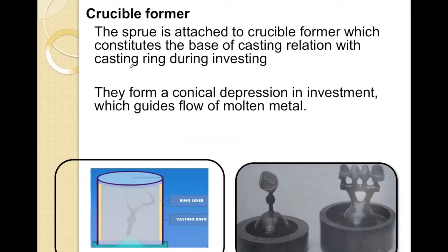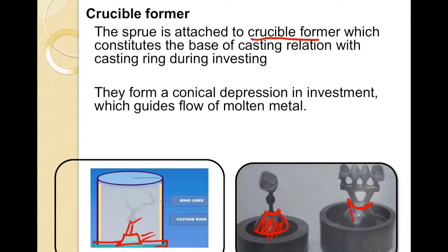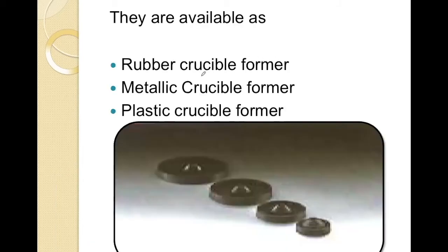After we are done with the sprueing of the wax pattern, the sprue is attached to the crucible former. The crucible former is the base of the casting in relation to the casting ring during the investment. It has a conical depression in the investment which guides the flow of the molten metal into the sprue former. This is the crucible former, this is the sprue former, and these are the wax patterns. These crucible formers are available as rubber crucible former, metallic, or plastic type.